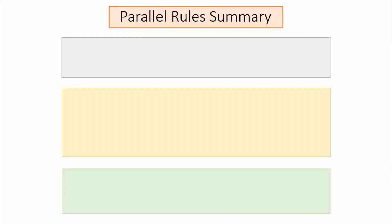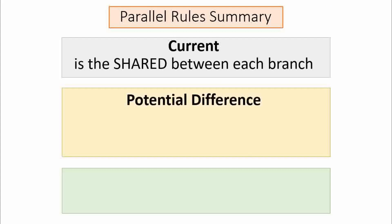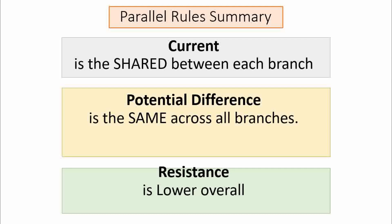There are three main rules you need to know for parallel circuits. First rule: the current is shared between each branch. Second: the potential difference is the same across all the points or across all the branches. Finally, the resistance is lower than the overall resistance in a parallel circuit. Make sure you use this to fill in your flash cards.